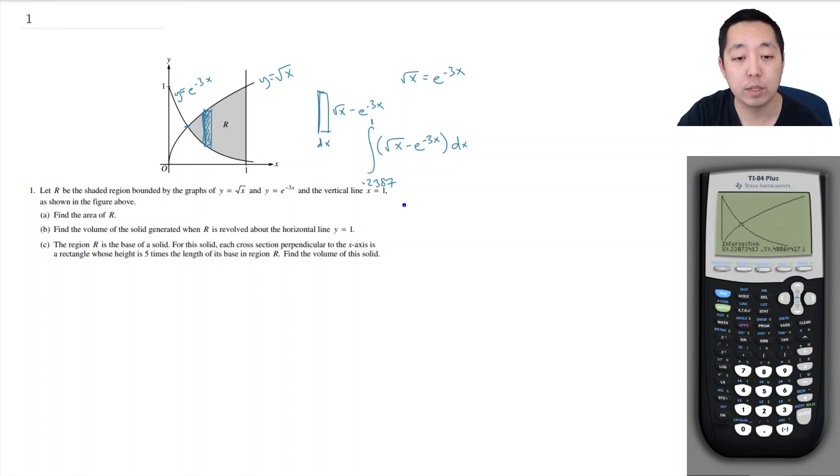So now I want to do the area of this. I want to compute this integral. And I can use a calculator. You can actually do this integral by hand, but I will show you just how to do the calculation on here. What function are we doing? We're doing the square root of x minus e to the minus 3x. I'm integrating variable x. And I'm going from 0.2387 all the way up to 1. That is 0.4426. So that's the area of r.